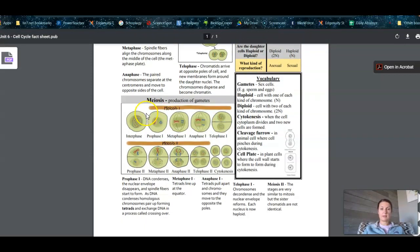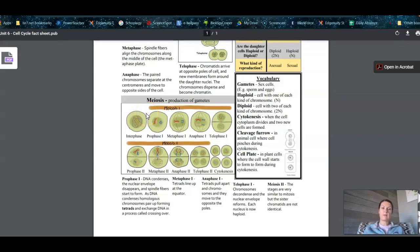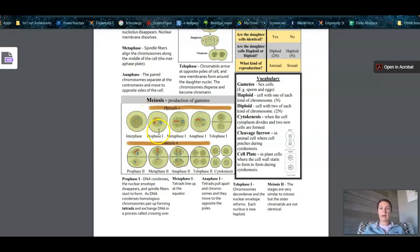So when we look at those phases of meiosis, they're the exact same as the phases of mitosis. They just have a one after them. So we have interphase, which would be that G1, S, and G2. And then we go into prophase one, metaphase one, anaphase one, telophase one. And then we do the same thing again, but with a two.